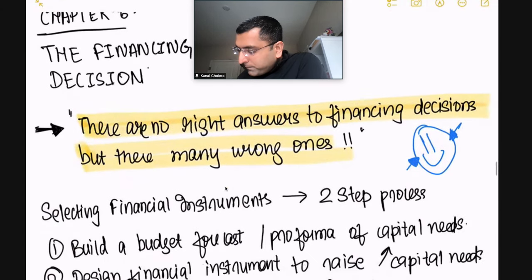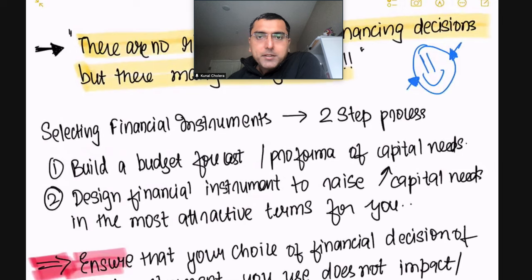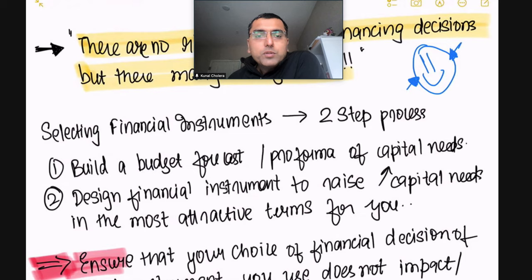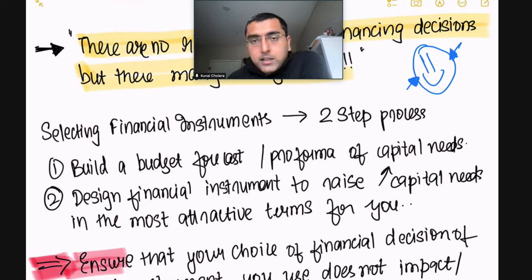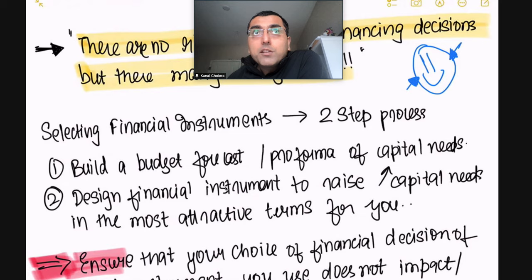Choosing what instrument to use is a two-step process. The first step is to forecast, budget, and build pro forma statements, which we have covered from Chapter 2 onwards. This will tell you what your capital needs are — what money your business requires based on its current growth structure, what operations scaling would require, what plant and facility would be needed. So build a forecast first.